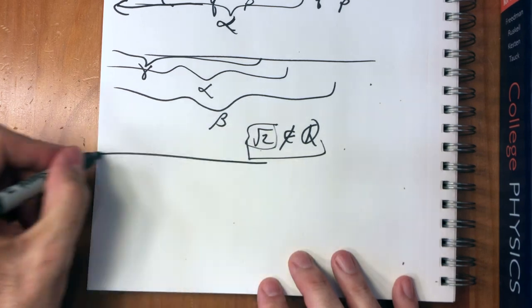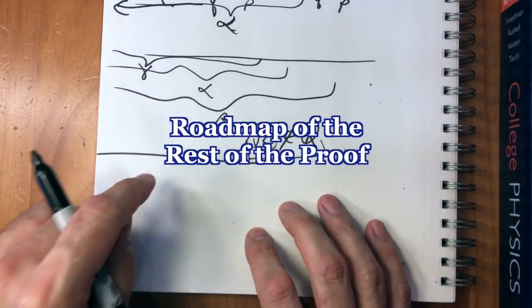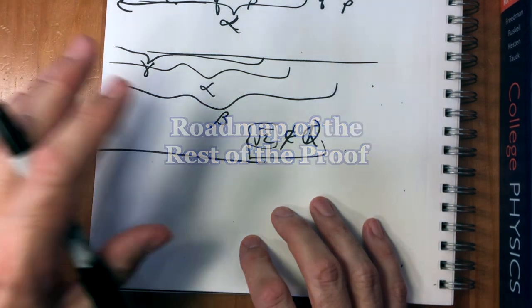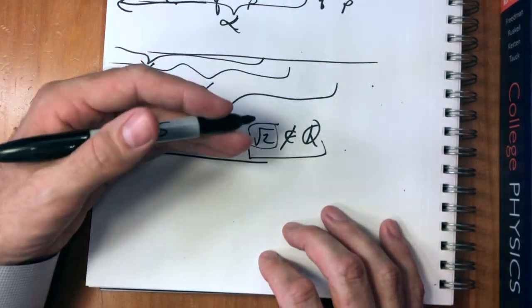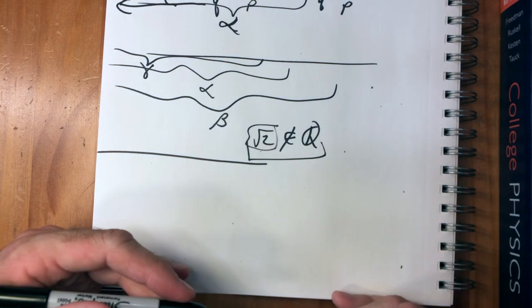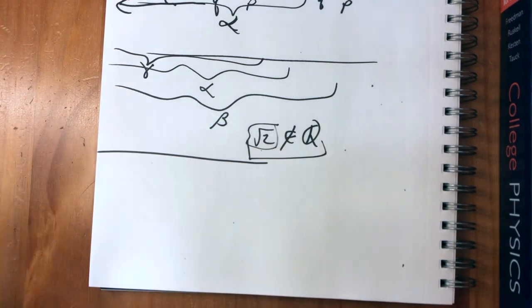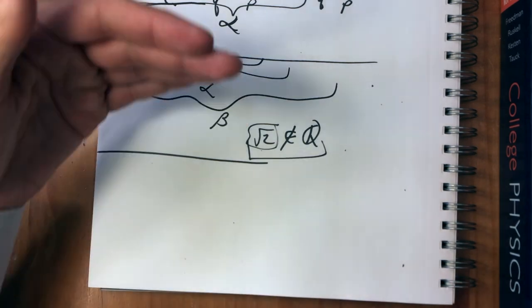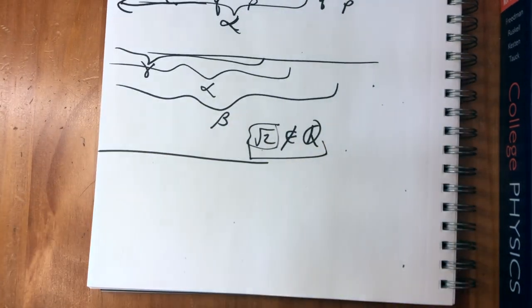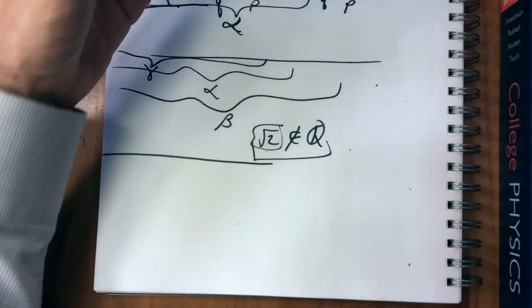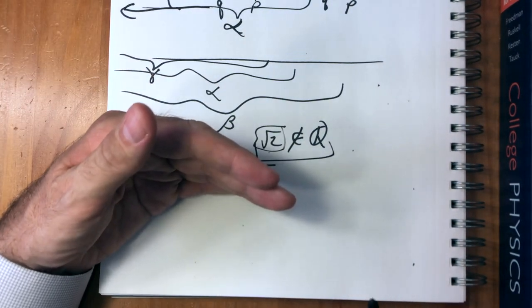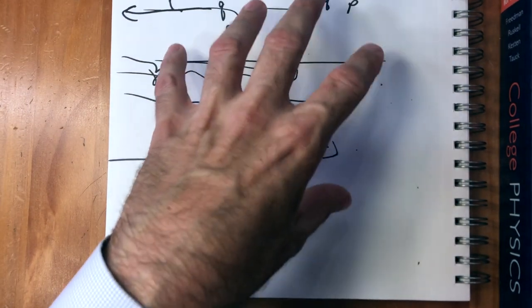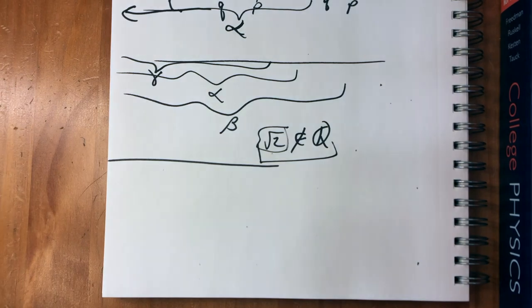Let's see how this goes. First we're going to put an order on this collection of sets — the cuts. Then we're going to show that this collection has a least upper bound property. Then we'll define addition and multiplication and show those satisfy the field axioms. Then we'll show it's an ordered field. After that we have to embed the rationals into this set of reals and we'll be done.